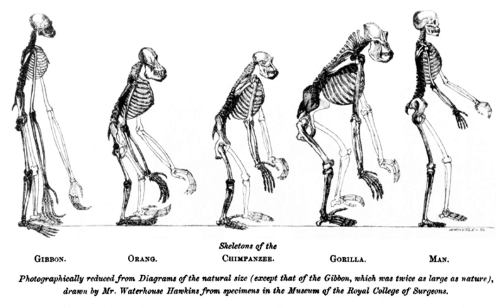While there is a remarkable difference in general proportions of body and limbs between the gorilla and man, in whatever proportion the gorilla differs from man, the other apes depart still more widely from the gorilla, and consequently such differences of proportion can have no ordinal value. Huxley rejects the idea that man should occupy an order separate from the apes. Therefore, they are primates.